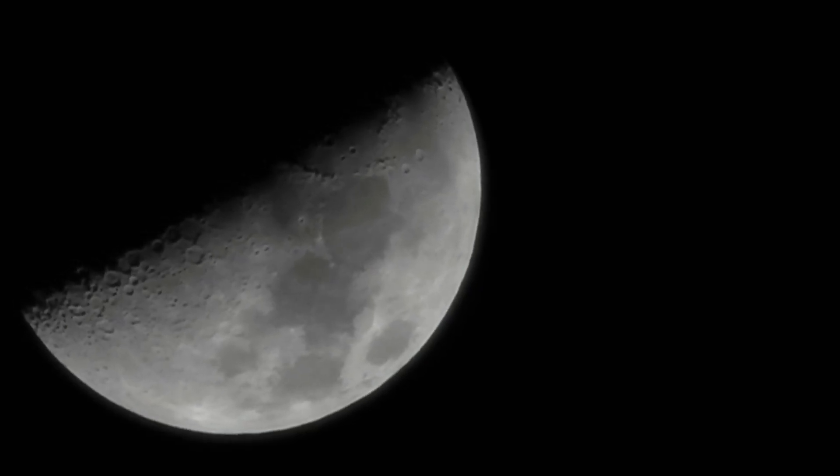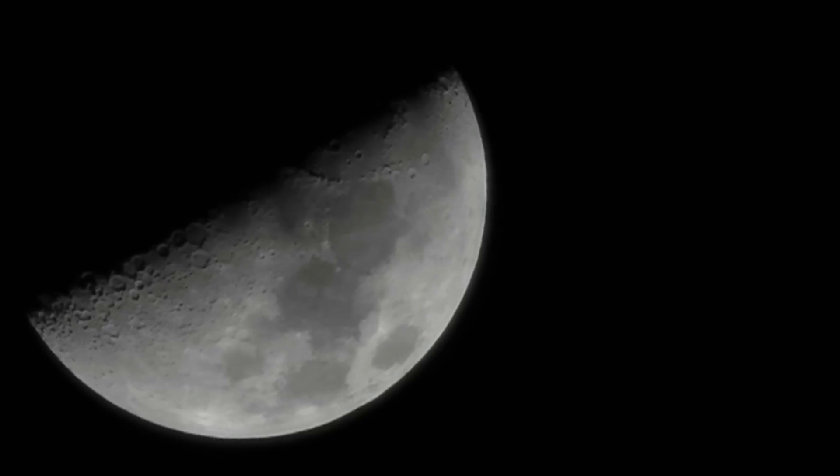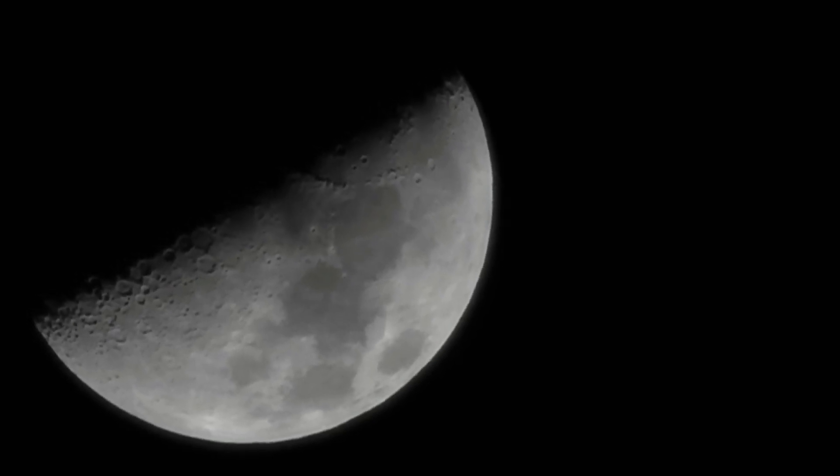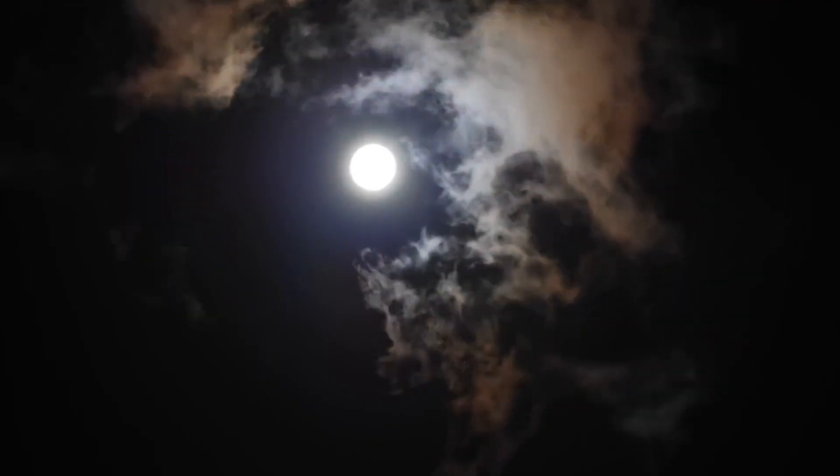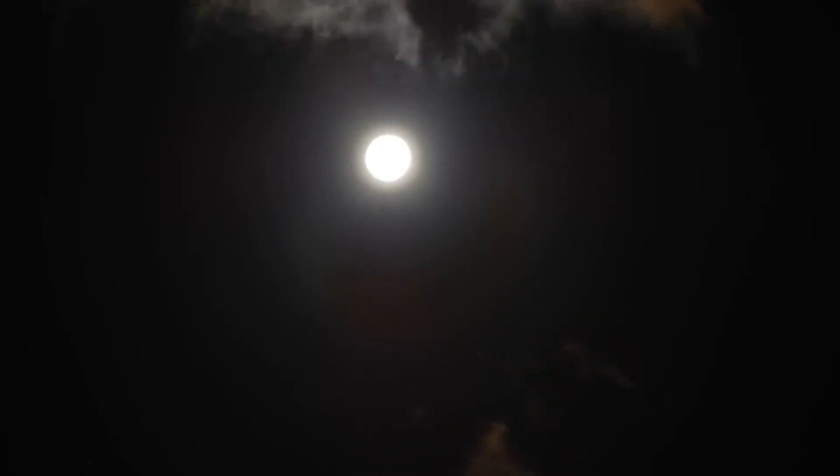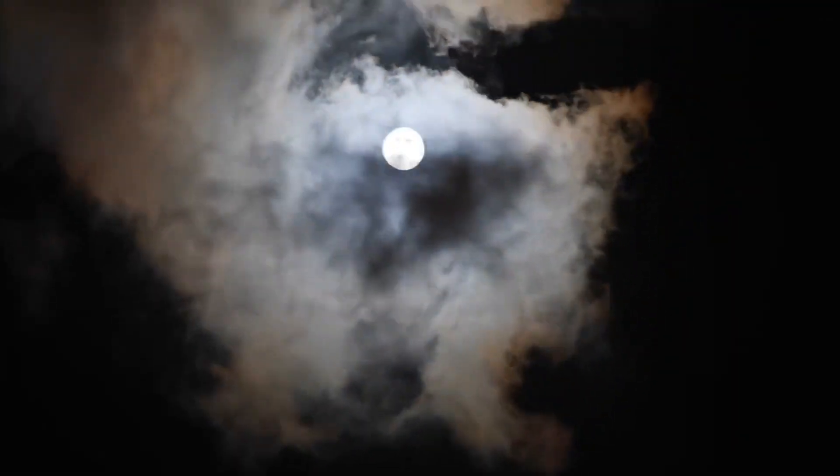When the Moon first formed around 4.5 billion years ago, it was much closer to Earth, perhaps only about 14,000 miles away compared to its current average distance of 238,855 miles. Back then, it would have appeared enormous in the sky, and Earth's days were much shorter, lasting only about five hours.